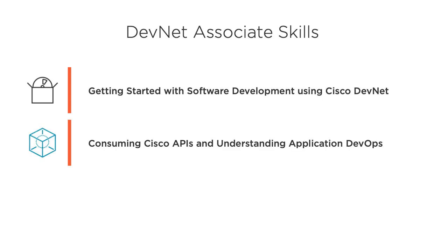The next course covers two main topics: Cisco product APIs and core DevOps tools like Docker and continuous integration, continuous deployment pipelines. Our main goal is to elevate Cisco products and add some unit and system tests to our Flask app.